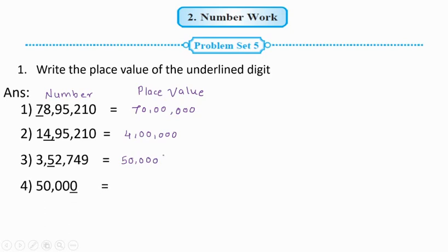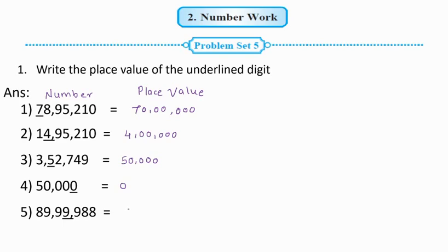Next number: 50,000. The underlined digit is 0. 0 is in the units place, so its place value is 0. Next number: 89,99,988. The underlined digit is 9. 9 is in the thousands place, so the place value of 9 is 9,000.